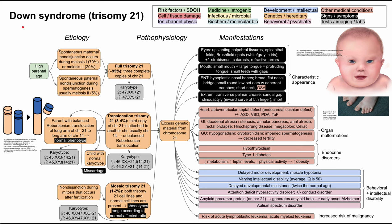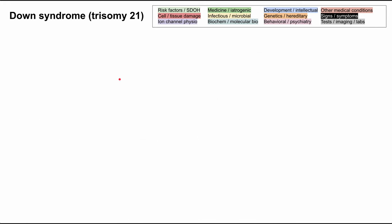This is a mechanism of disease map for Down syndrome, also called trisomy 21. I'll be talking about the etiology, the pathophysiology, and the manifestations for Down syndrome. Each of these boxes is color-coded according to the legend at the top right. I'll be clearing all of the boxes and talking through them one by one, explaining them as we go.